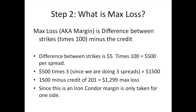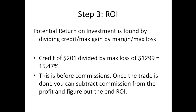Since this is an iron condor trade, the margin is only taken on one side because it's a balanced trade — the difference between the strikes is $5 on both the calls and the puts. If the call side had a $5 spread and the put side had a $10 spread, we would have used the $10 figure. Also, because it's on the same month and same underlying, margin is only required on one side.